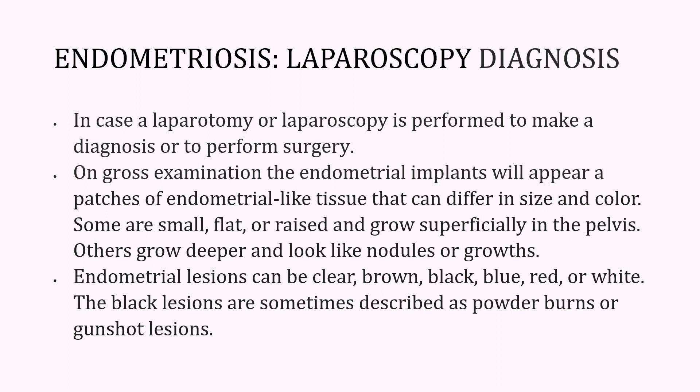When looking through laparoscopy or laparotomy, the implants will appear as patches of endometrial-like tissue but will differ in size and color. Some are flat, some are raised, and some even have endometrial-like tissue visible on top. Some patches grow very deep and look like nodules or growths. The lesions may be brown, black, red, or white. Sometimes they can be described as powder burns or gunshot lesions — tiny black lesions spread over a small area — and sometimes they appear as punched-out areas or reddish areas.